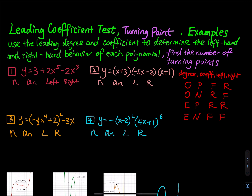Starting with the first one, we have y equals 3 plus 2x to the fifth minus 2x to the third. Where is the highest degree? The highest degree is 5 — that is the biggest degree. So therefore, the leading degree is 5.